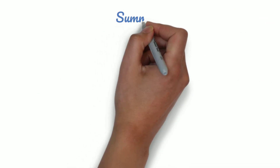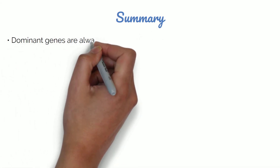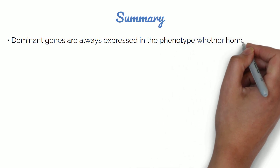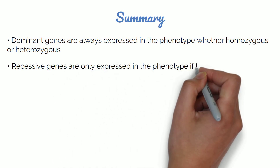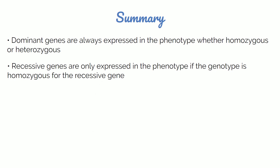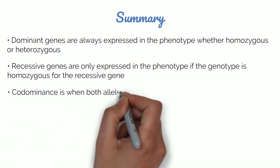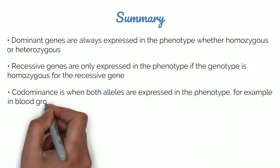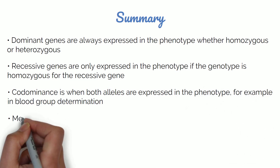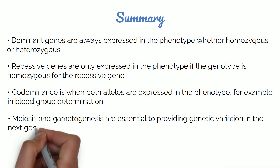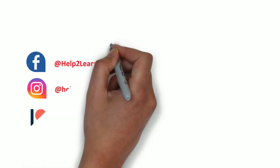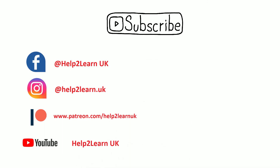To summarise today's video: dominant genes are always expressed in the phenotype, whether homozygous or heterozygous. Recessive genes are only expressed in the phenotype if the genotype is homozygous for the recessive gene. Co-dominance is when both alleles are expressed in the phenotype, for example in blood group determination. Meiosis and gametogenesis are essential to providing genetic variation in the next generation. This concludes today's video on inheritance and genetic variation. Thank you for watching, and we hope to see you next week for the final part of inheritance, which will focus on genetic disease and the control of gene expression.